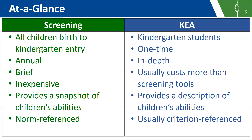Screening tools are designed as norm-referenced tools, meaning they compare and rank the child to other children based on the population in which the tool was normed. A KEA, on the other hand, is designed to be criterion-referenced, which means it compares the child's performance to a set of standards or criteria. This is an important distinction when measuring school readiness — you want results to show the child's performance compared to a set of standards.